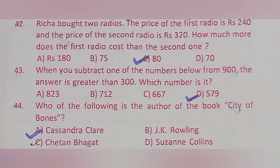Question 43: When you subtract one of the numbers below from 900, the answer is greater than 300. Which number is it? Option A: 823, Option B: 712, Option C: 667, Option D: 579. The correct answer is Option D: 579.